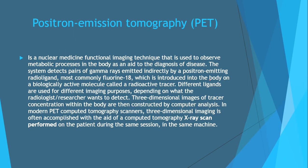Positron emission tomography, or PET, is a nuclear medicine functional imaging technique used to observe metabolic processes in the body as an aid to diagnosis. The system detects pairs of gamma rays emitted by a positron-emitting radio ligand — most commonly fluorine-18 — introduced into the body on a biologically active molecule called a radioactive tracer. In modern PET-CT scanners, three-dimensional imaging is accomplished with the aid of a CT X-ray scan performed in the same session.